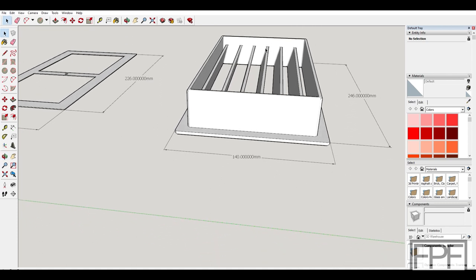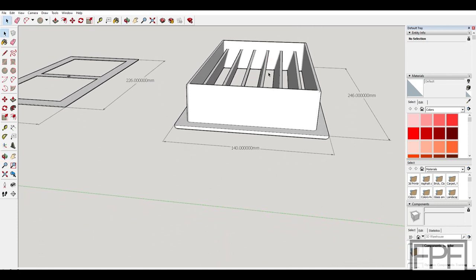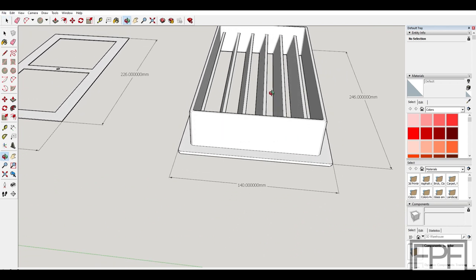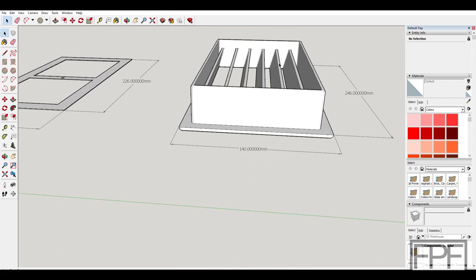Just keep in mind if you reduce the height of these, if you don't want to be able to see through the vent, you may need to increase the angle that they're laying over to be able to block someone seeing through that if you don't want to be able to see through the vent.